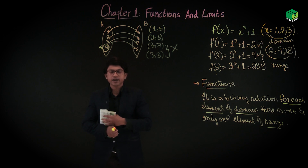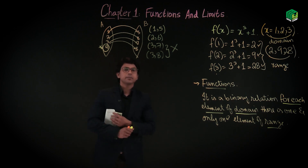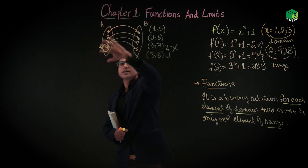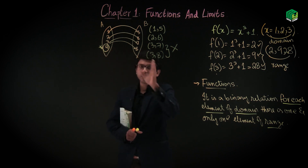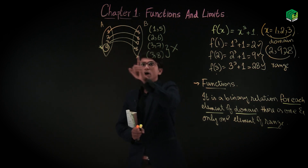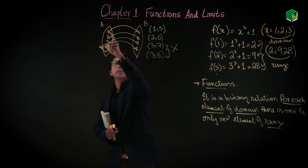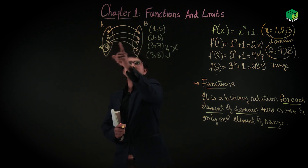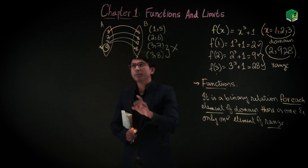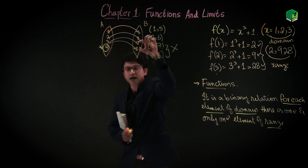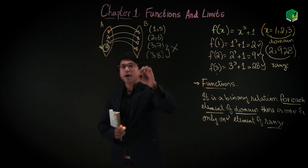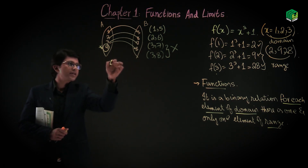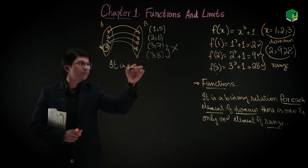To repeat: function is a binary relation. Each element of domain maps to one element of range. First, every domain element must be utilized. Second, one domain element must map to only one range. If domain element 3 maps to both 7 and 8, this domain has two ranges — so this is not a function.